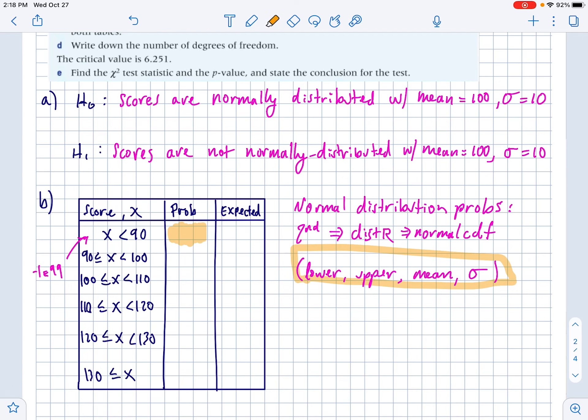So just make a note that this part is going to be negative one E to the 99. And the E button is right above your comma button if you can't find it. When you do that, you do negative one E to the 99 and then 90 is your upper. And then your mean is 100 and your standard deviation is 10, which they told us in the beginning. If you paste that all in there and hit enter, you should get 0.158.